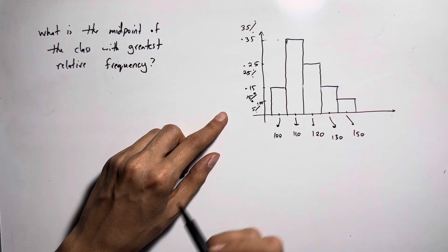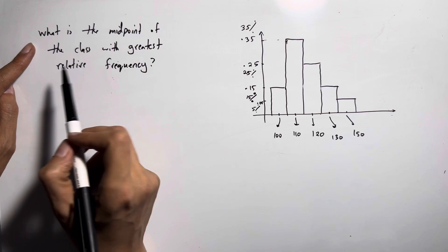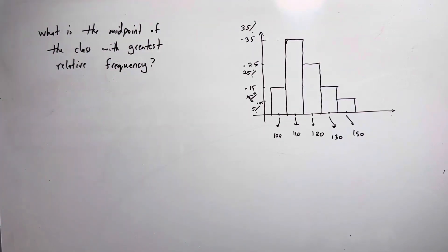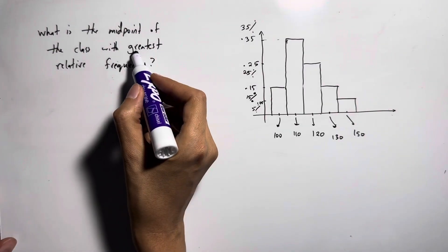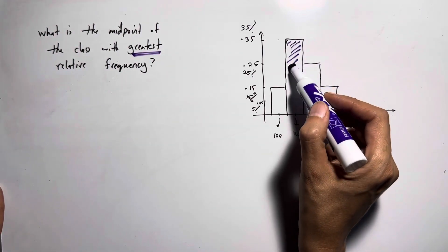The question says what is the midpoint of the class with the greatest relative frequency. When you're talking about greatest relative frequency, you're basically talking about the largest bar.